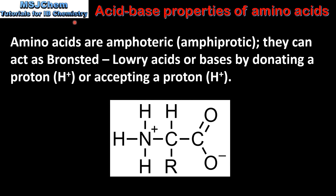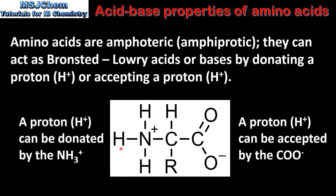Next we look at the acid base properties of amino acids. Amino acids are amphoteric or amphiprotic. This means they can act as Bronsted-Lowry acids or bases by either donating a proton or accepting a proton. Here we have the structure of the zwitterion. A proton, which is a hydrogen ion, can be donated by the NH3+ group, or a proton can be accepted by the COO- group. So depending on the pH, an amino acid can either donate a proton or accept a proton, therefore it is amphoteric.